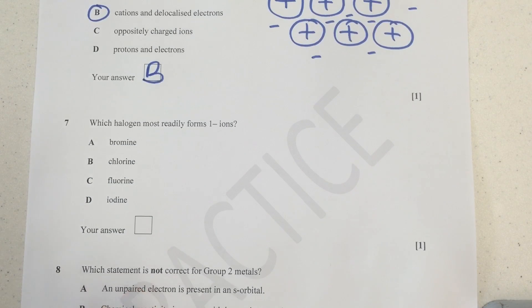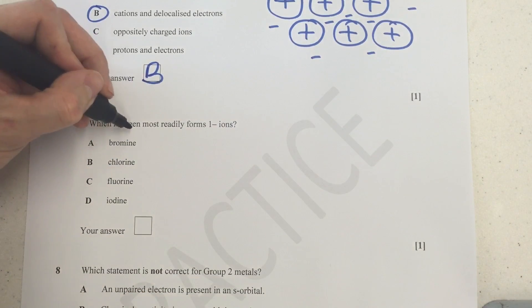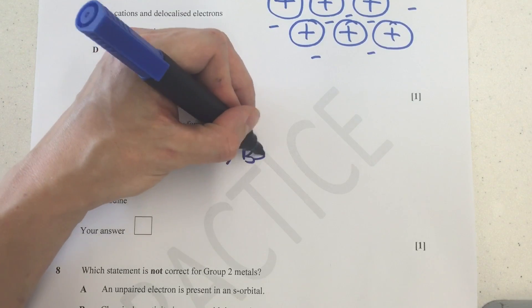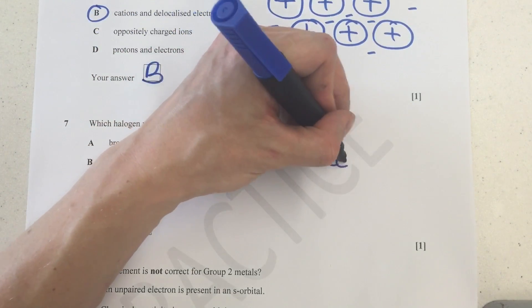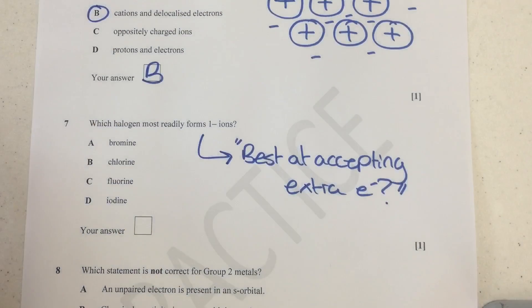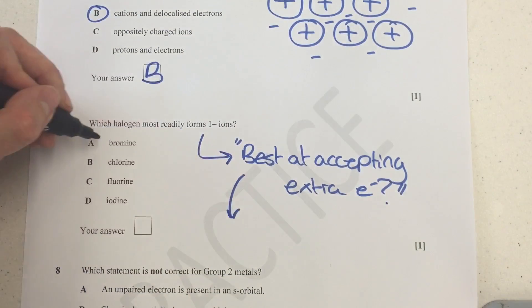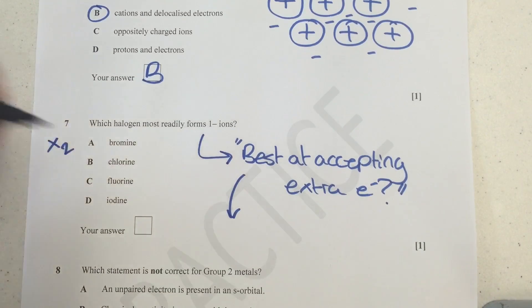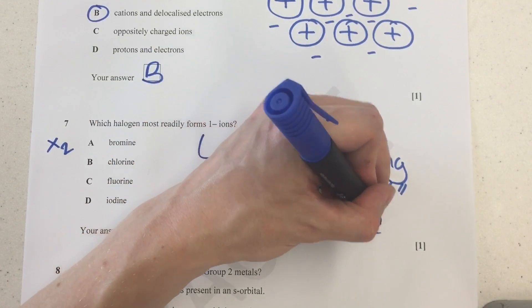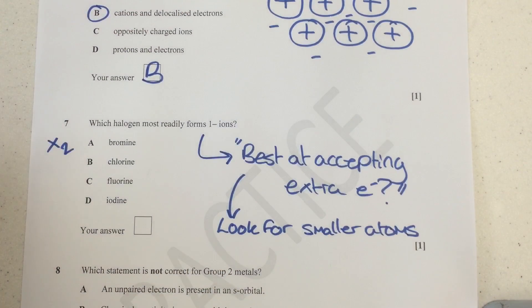Next one then. This question can be reworded a little bit. Which halogen most readily forms 1- ions? So what are we actually trying to say here? We're trying to say which is the best at accepting an extra electron? That's what we're actually trying to say. And so what we're looking for is, for these molecules - remember these would actually be the X2 - we need to look for the smaller atoms that are involved. Because that means the nucleus is going to be closer to the valence shell where this extra electron will be going. And so the correct answer here has absolutely got to be fluorine, because it's right at the top of group 7.